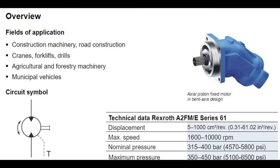Depending on size, the motor has a maximum speed range of 1,600 to 10,000 revolutions per minute at a nominal pressure of 315 to 400 bar, with temporary high pressure between 350 and 450 bar.